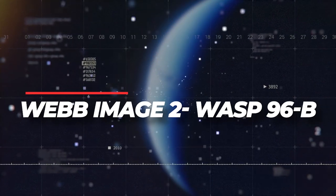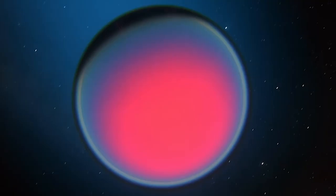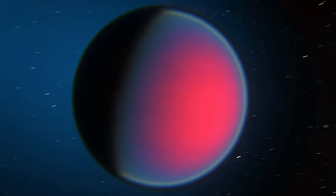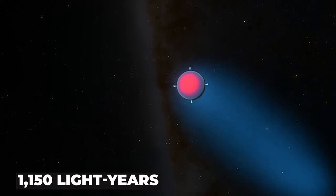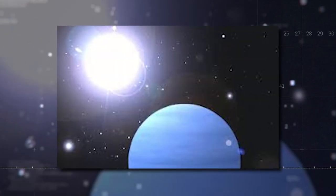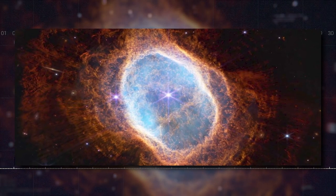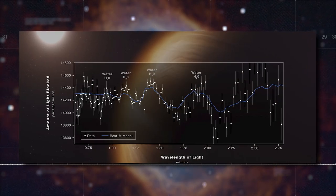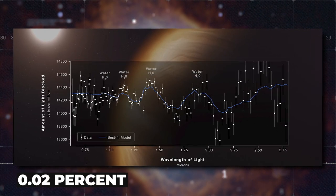WASP-96b is a superheated gas giant exoplanet that circles a sun-like star in the constellation Phoenix, 1,150 light-years away. Webb looked at the WASP-96 star system for 6 hours and 23 minutes, starting around 2.5 hours before the transit and finishing approximately 1.5 hours after the transit was completed. A transit happens when an orbiting planet passes between a star and a telescope, obscuring part of the star's light. The device detected changes in brightness as tiny as 0.02% in this observation.